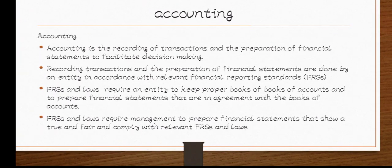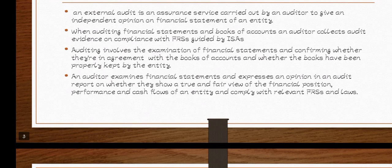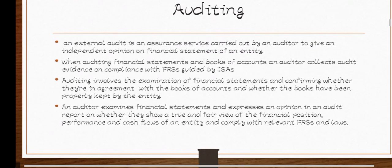The third difference is that financial reporting standards — FRSCs — and laws require an entity to keep proper books of accounts and to prepare financial statements that are in agreement with the books of accounts. So in accounting, an entity is required to keep proper books of accounts and then prepare financial statements that are in line with those books. Then for auditing, it involves examination of financial statements.